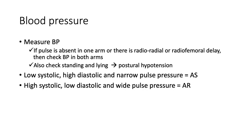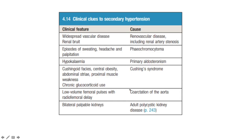Blood pressure: measure BP and if pulse is absent in one arm or there's radio-radial or radio-femoral delay, check blood pressure in both arms. Also check lying and standing to avoid missing postural hypotension. In aortic stenosis: low systolic, high diastolic, narrow pulse pressure. In aortic regurgitation: high systolic, low diastolic, wide pulse pressure. 95% of hypertension is idiopathic, but 5% is secondary. For secondary hypertension: renal bruit and vascular disease suggests renal artery stenosis. Paroxysms of sweating, headache, and palpitations suggest phaeochromocytoma. Hypertension with hypokalemia suggests Conn's syndrome. Cushing's syndrome presents with Cushingoid facies, central obesity, abdominal striae over 2cm, proximal muscle wasting — take history of chronic glucocorticoid use. Coarctation of the aorta: low volume femoral pulses with radio-femoral delay. Bilateral palpable kidneys suggest adult polycystic kidney disease.